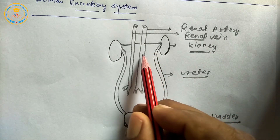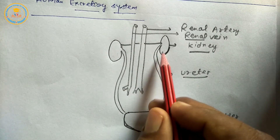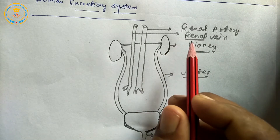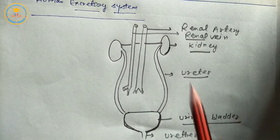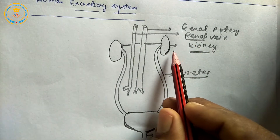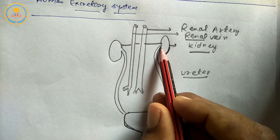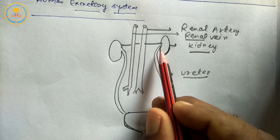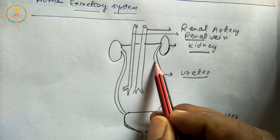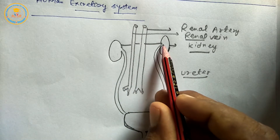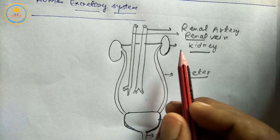Renal artery, renal vein, ureters, and nerves enter into the kidney through the hilum.